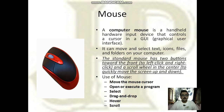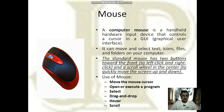Another most commonly used device is the mouse. Mouse is a handheld hardware input device that controls a cursor in a graphical user interface environment. It is used to move and select text, files, icons, and folders on your computer. The standard mouse has two buttons — left click and right click — and a scroll wheel in the center used to quickly move the screen up and down.